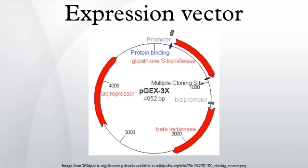The expression vector is transformed or transfected into the host cell for protein synthesis. Some expression vectors may have elements for transformation or the insertion of DNA into the host chromosome and integrase sites for chromosomal insertion. Some vectors may include targeting sequences that may target the expressed protein to a specific location such as the periplasmic space of bacteria.